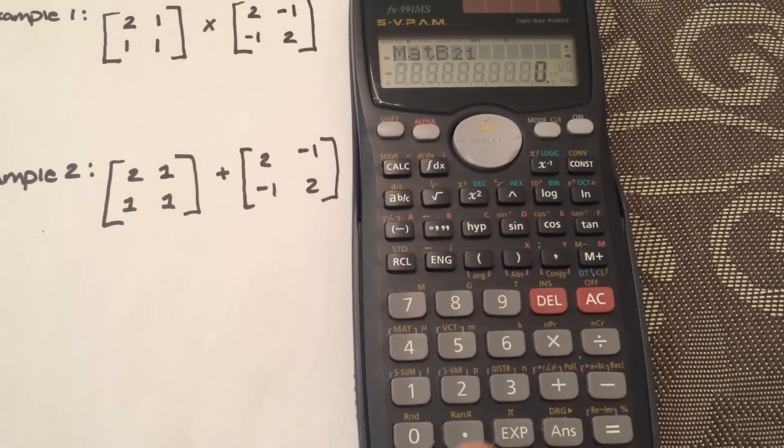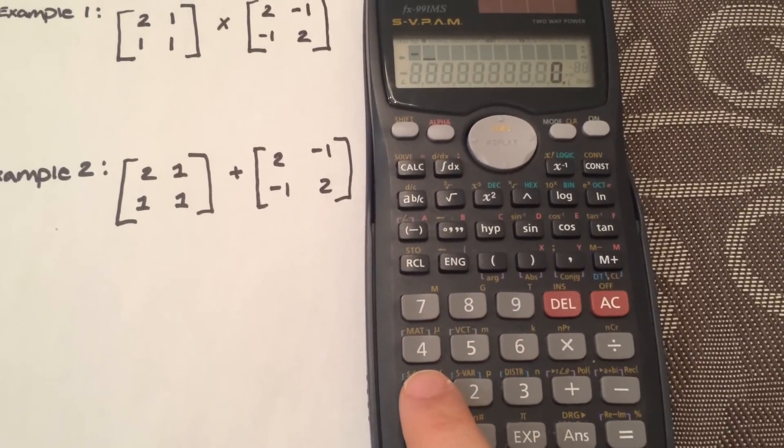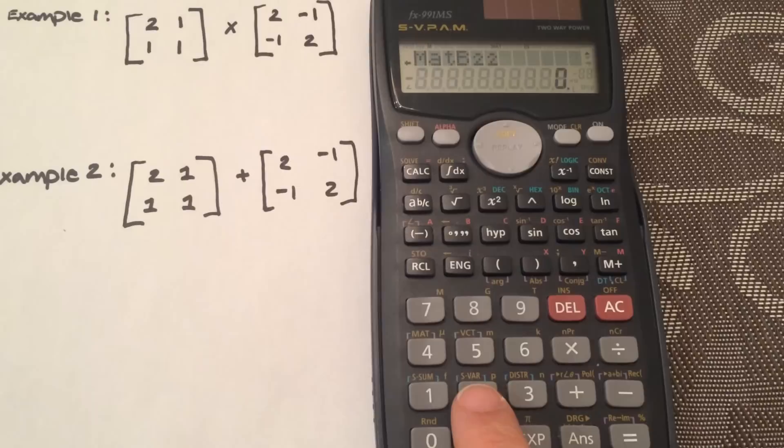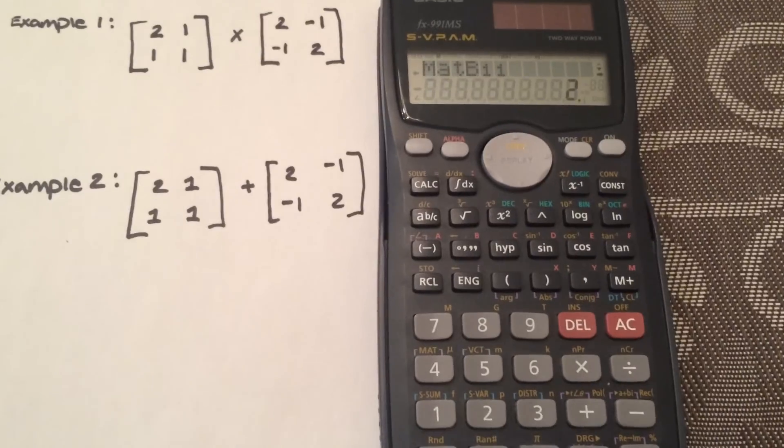And then now it's asking for, again, so negative 1, so the second row. And the second column, second row is 2. So now that we put them all in, what you're going to do is you need to clear all this.